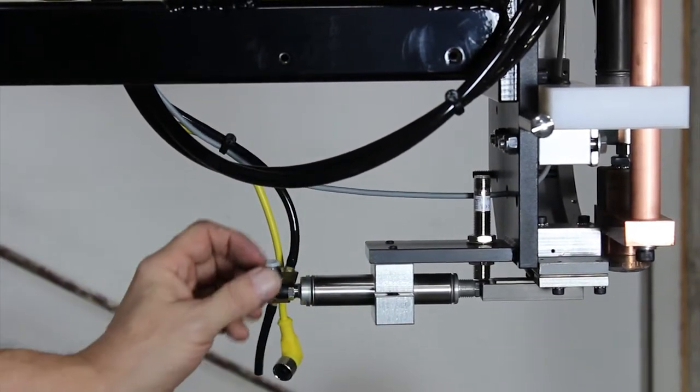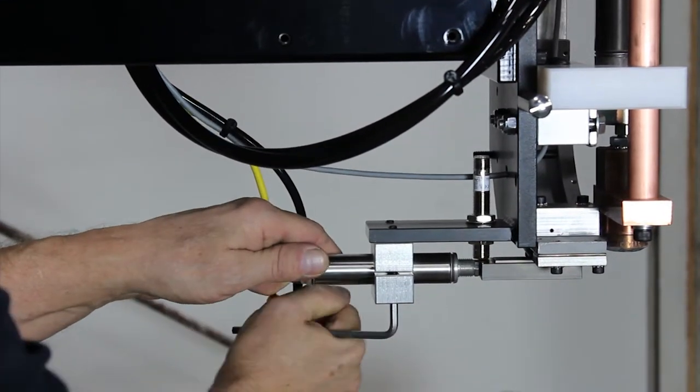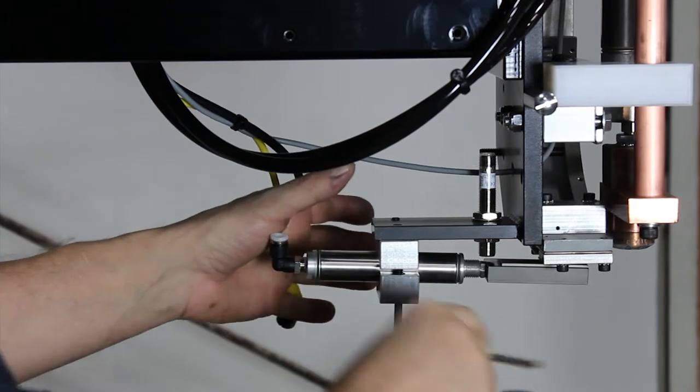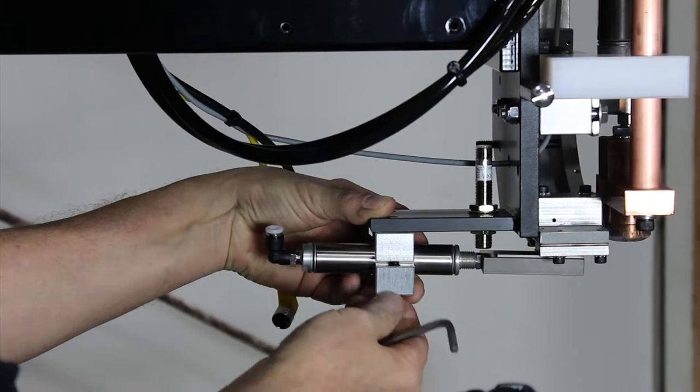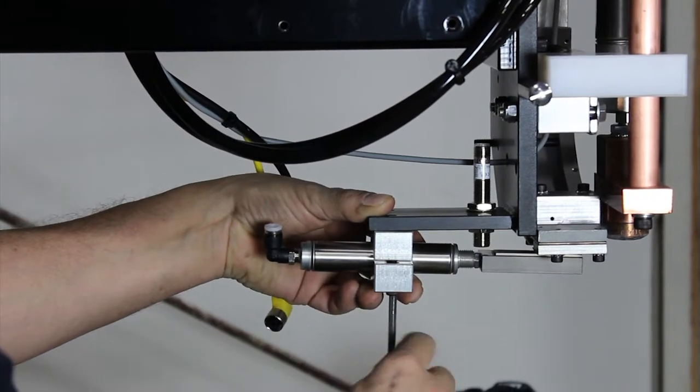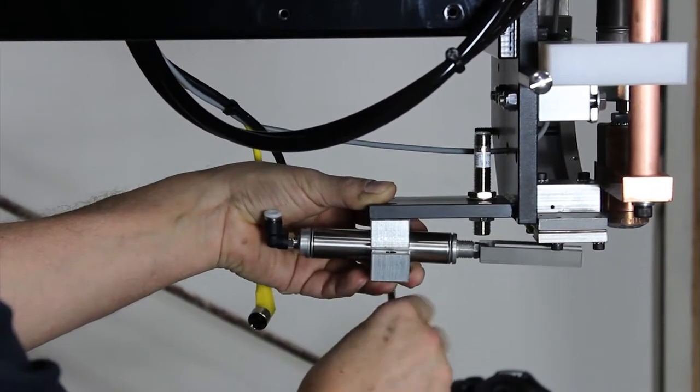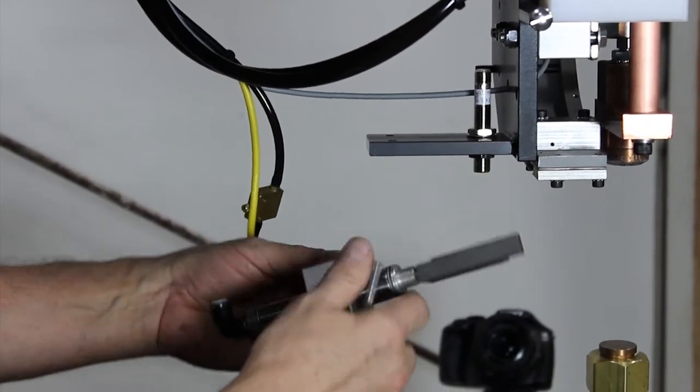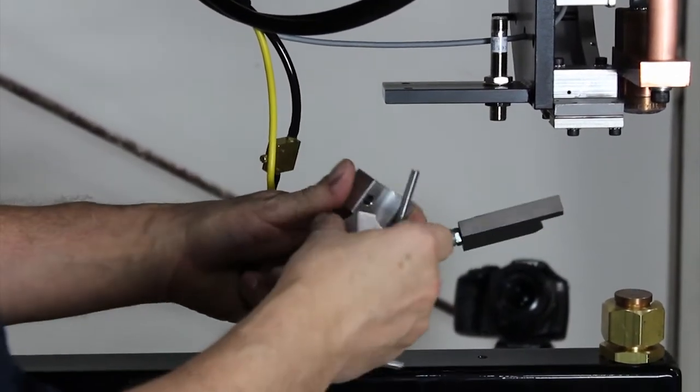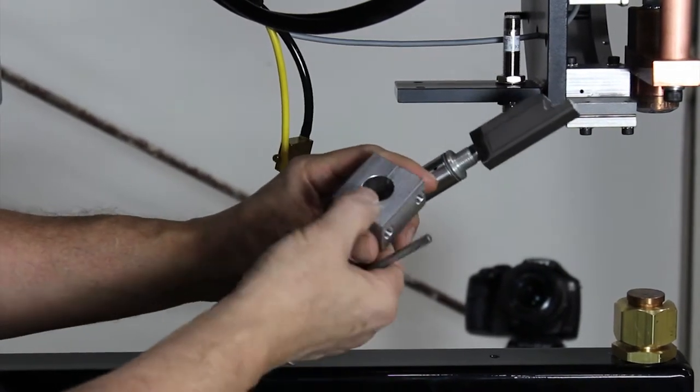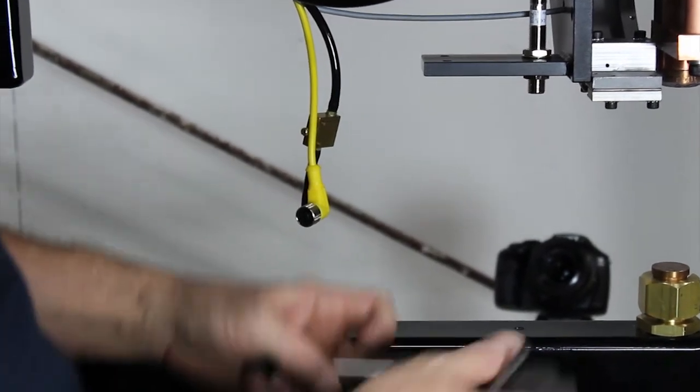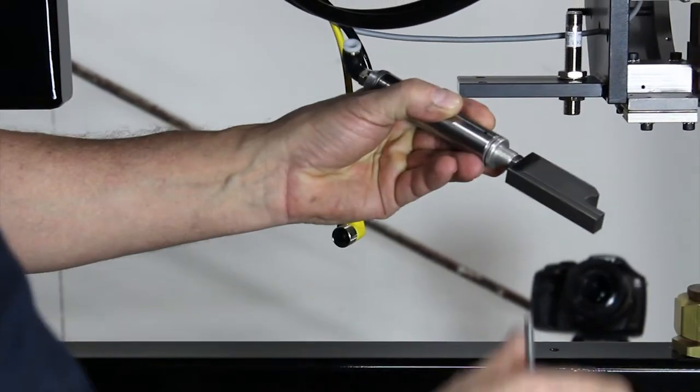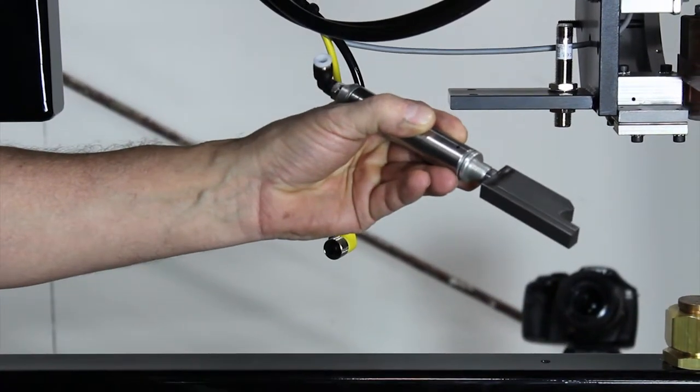Then you can remove the allen head cap screws which are going through the mounting block. This mounting block will be reused with the new cylinder. This is the old cylinder, which is air out and spring return. The transfer block on the end of the cylinder will be reused with the jam nut.